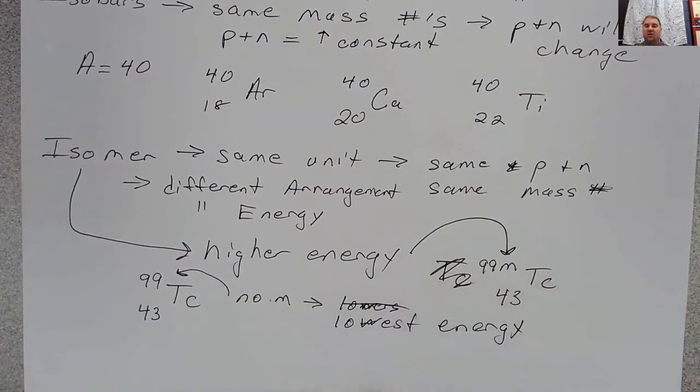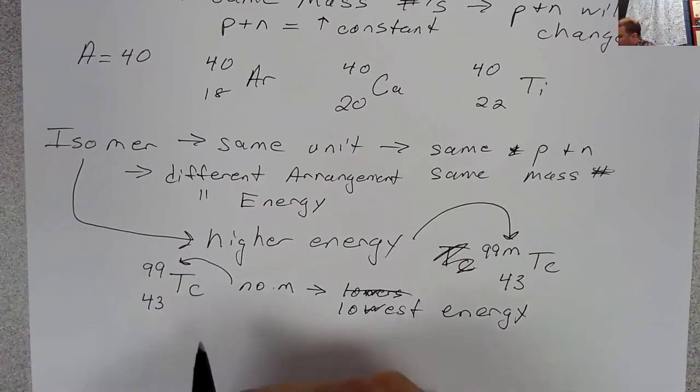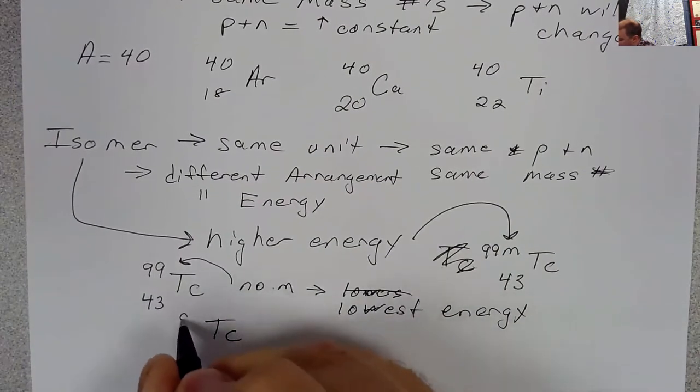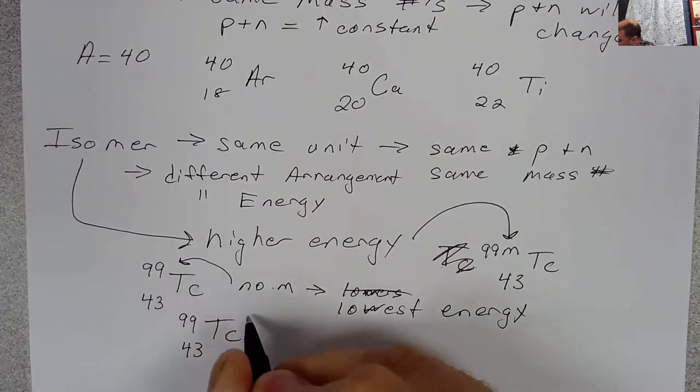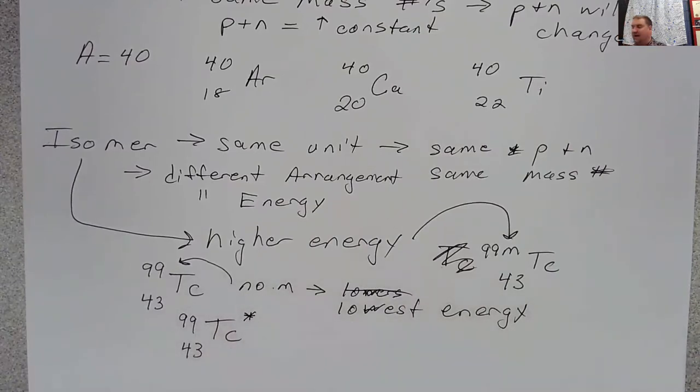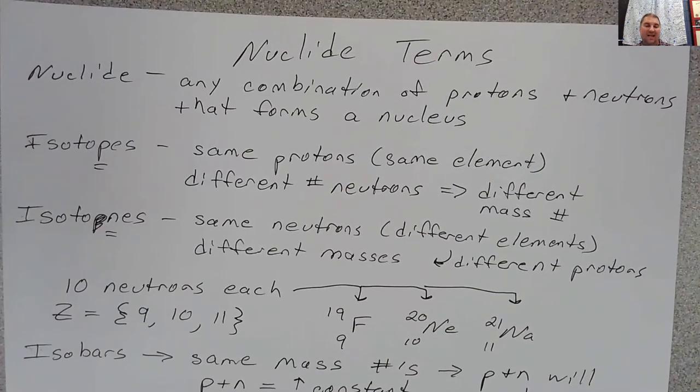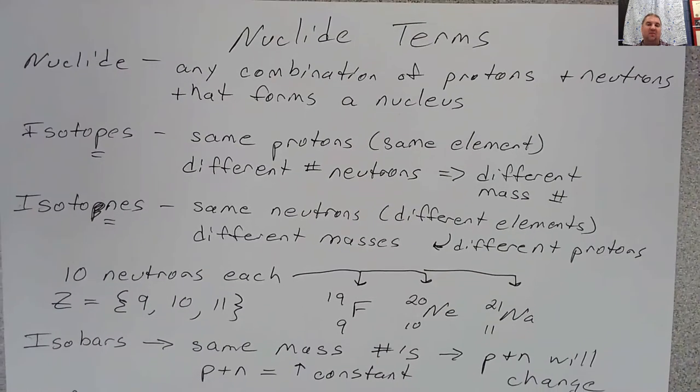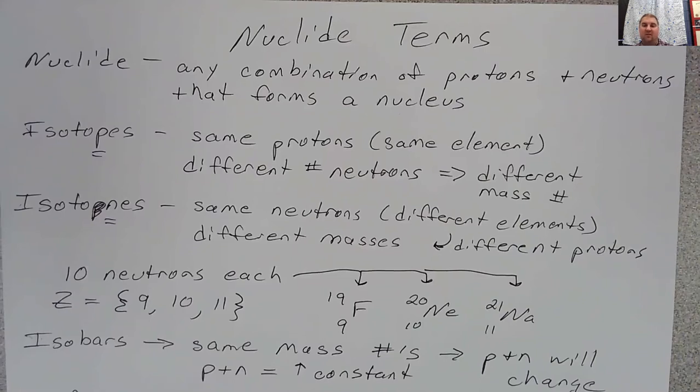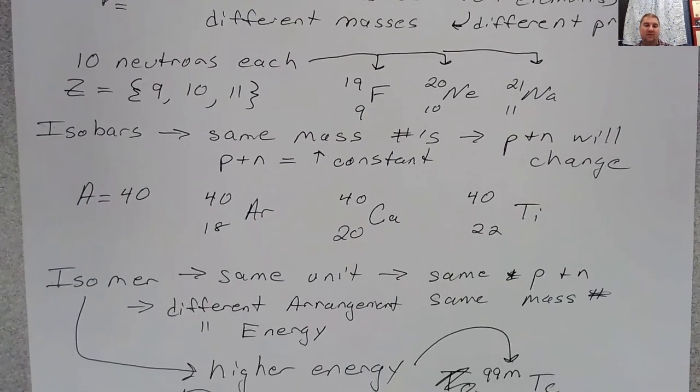The other way you could show this sometimes would be with an asterisk, so you could say technetium 99, and you could put an asterisk here, and that asterisk would represent a higher energy state. In this case it's in the same spot where charge would go, but again with nuclides we're not worried about charges. So you want to think about all these terms, you want to think about how we can apply these to atomic symbols, because if we're looking at atomic symbols and we don't worry about the electrons, then we're really also talking about a nuclide.